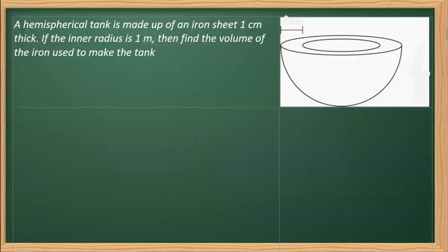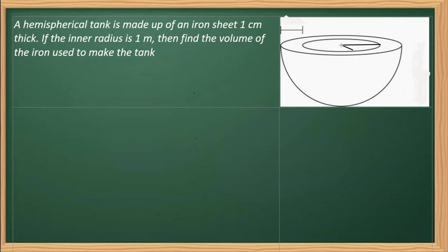In this question, a hemispherical tank is made up of an iron sheet which is one centimeter thick. The inner radius is one meter and we need to find the volume of the iron used in making the tank. As you can see, I have taken a hemisphere — this is the inner radius, and adding the thickness gives the outer radius.